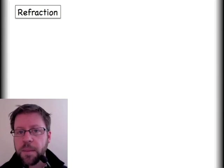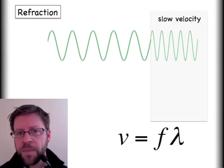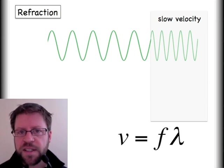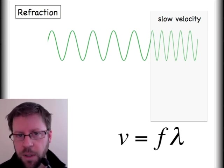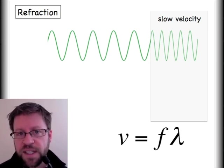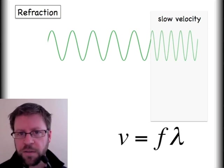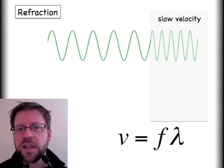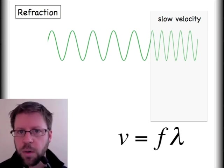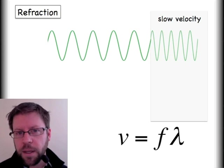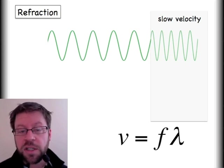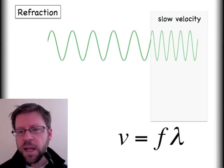To deeper understand this subject, let's briefly talk about waves in general. The velocity of a wave equals frequency times wavelength. The velocity of a wave is decided by the medium, so if a wave enters a new medium, the velocity must instantly change. The frequency is decided by the source, so it can't change either. That means the only thing that can change is the wavelength. Here's a simple model of a wave going into a different medium that causes it to slow down — you should see the wavelength get smaller.